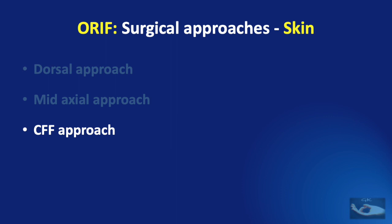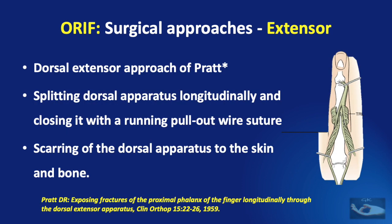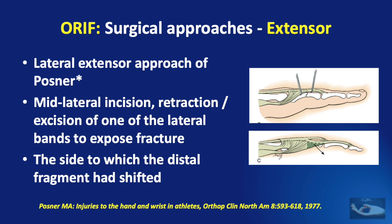The skin incision alone is not enough to expose the fracture; we need an approach through the extensor apparatus also. This can be through the dorsal extensor approach of Pratt, where the dorsal apparatus is split longitudinally and closed with a running pull-out wire suture — but scarring of the dorsal apparatus to the skin and bone is a disadvantage. In the lateral extensor approach of Postner, a mid-lateral incision is made and retraction or excision of one of the lateral bands exposes the fracture. This approach is to the side to which the distal fragment has shifted. Once the approach has been made, fixation is done with K-wires, lag screws, or plate and screws.